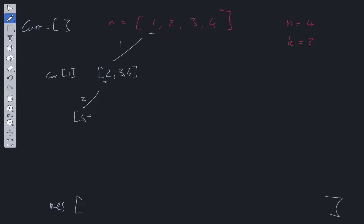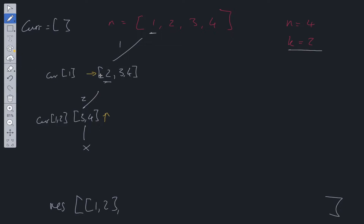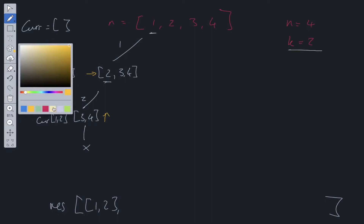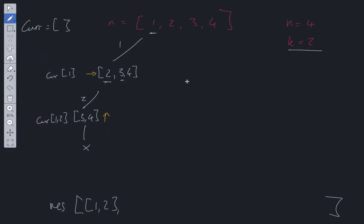If we take 1, current is equal to [1]. Then if we take 2, we have 3 and 4 left, and current is [1, 2]. Now if we take 3, we have conditional logic that prunes the recursive tree — we stop because current.length equals k. We push current [1, 2] into results, then backtrack and move across to check for other possible solutions.